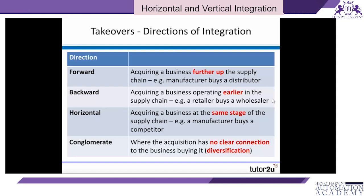For example, backward integration would be a retailer buying a wholesaler, or a manufacturing business buying a supplier of raw materials. A horizontal integration strategy involves buying a business that is operating at the same stage of the supply chain — for example, a manufacturer buying another manufacturer, or a retailer buying a retailer.